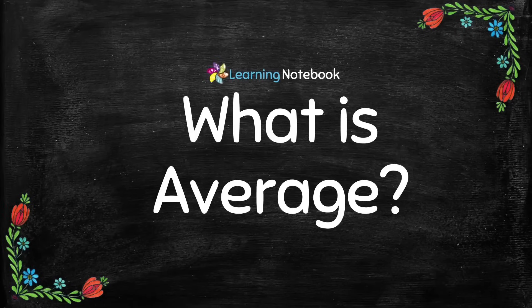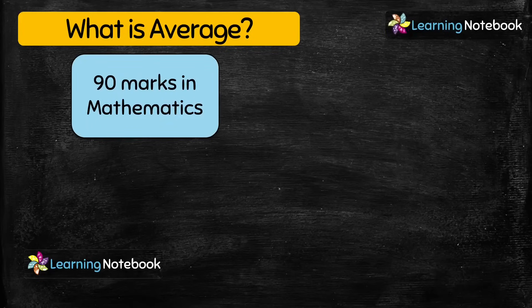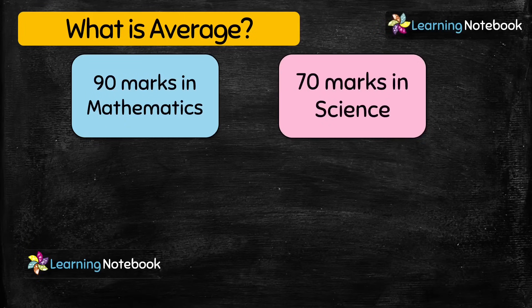Let's start with this chapter and first understand what is the meaning of average. To understand this concept, let's take an example. Suppose a student has secured 90 marks in mathematics and 70 marks in science. Now he wants to know his average score per subject, so here we need to find the average.